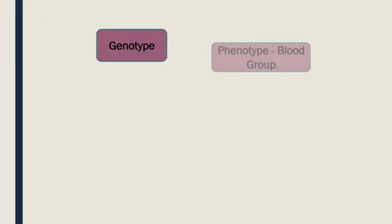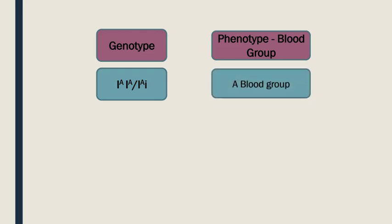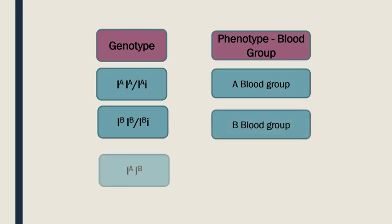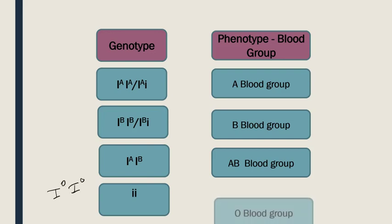Let us see the different genotype and phenotypic combinations of blood group. If you have homozygous IA or heterozygous IA (with small i), the blood group will be A. If homozygous IB or heterozygous IB, the blood group will be B. If you have IA and IB, acting as a co-dominant condition, your blood group will be AB. If you have recessive homozygous condition, small i small i (also written I0 I0), the blood group becomes O.